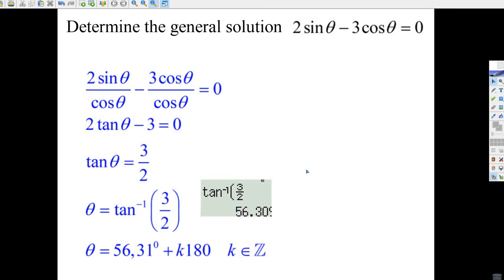And it's going to help you with one of the questions. So here you go. Here it is. Determine the general solution of 2 sine theta minus 3 cos theta equals 0.